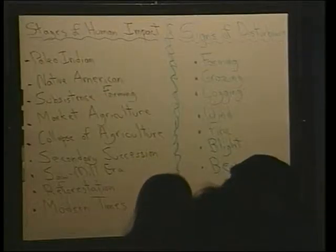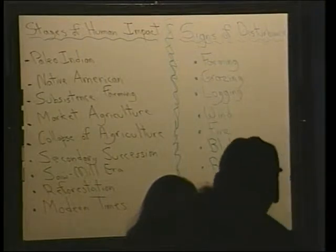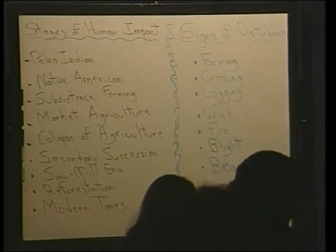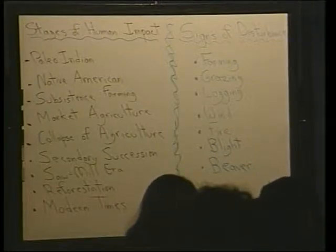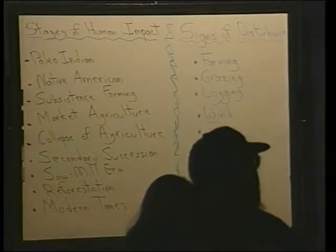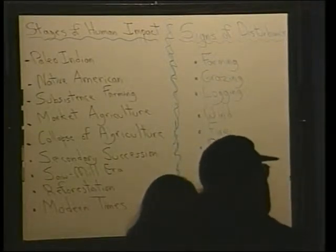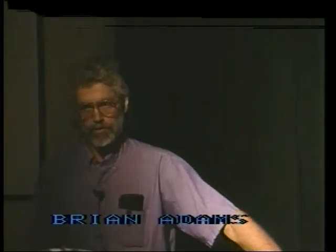What I'm going to talk about is the changing New England landscape. I'm going to race through a lot of slides in the brief time I have and look at stages of human impact on the New England landscape, ranging from the Paleo-Indians of about 10,000 years ago up until modern times, and also look at signs of disturbance so the next time you're out walking in the woods you can read the New England landscape for signs of these historic events.